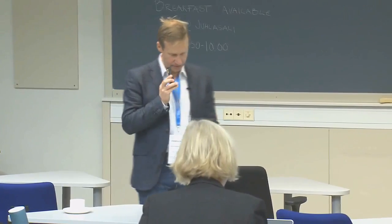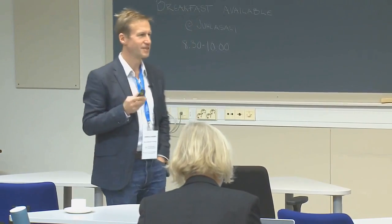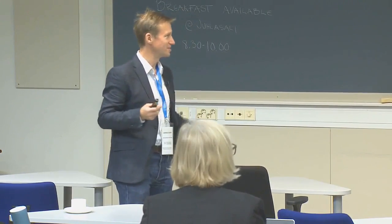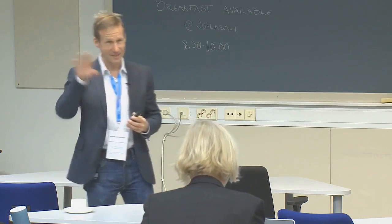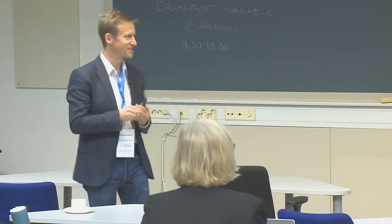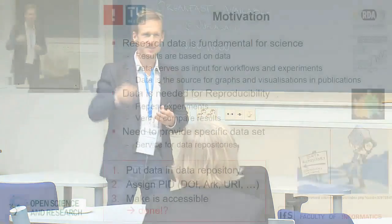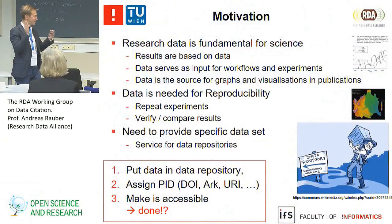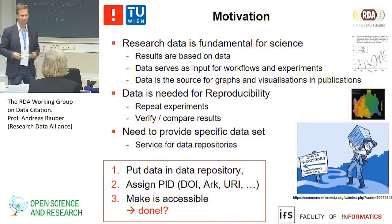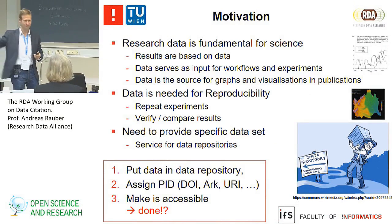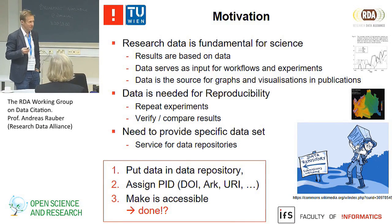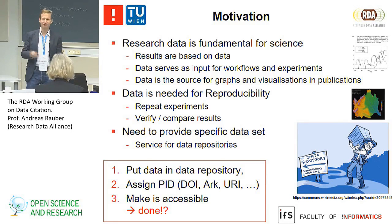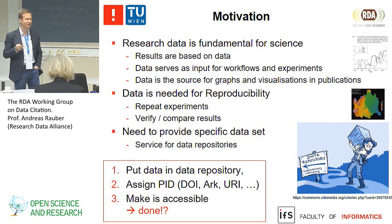What we did in the working group is we took a look at how things are happening now. What people are doing is: you do your study with your data, you put the data in a repository, add some metadata if you're really sophisticated, then you assign some persistent identifier and post it somewhere—a paper, blog, your homepage—and make it accessible. It's better than what we had before, but it's far from optimal.